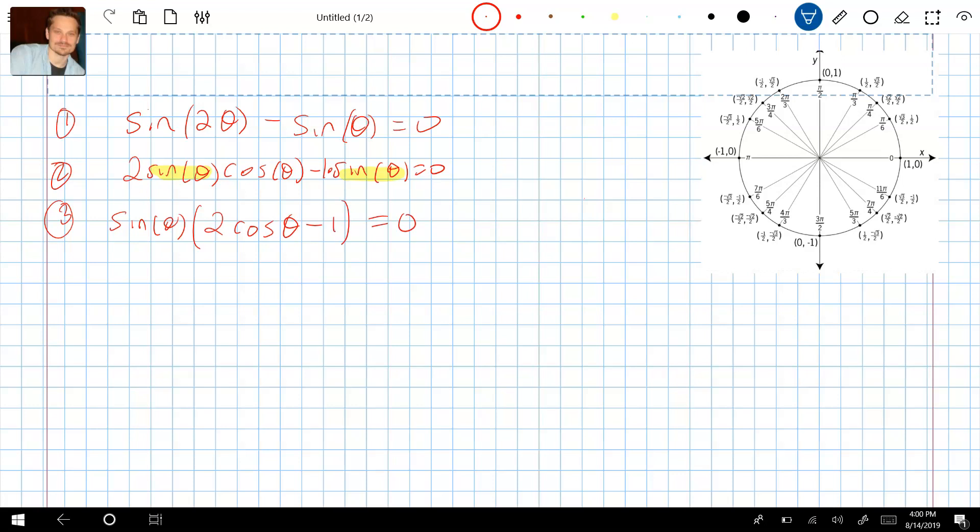At this point, sin(θ) is one factor, 2cos(θ) - 1 is the other factor. Set each one equal to 0 and solve. I want to be very clear: we're looking for the general solution. So sin(θ) = 0, that's one factor set equal to 0. Do that for the other one.